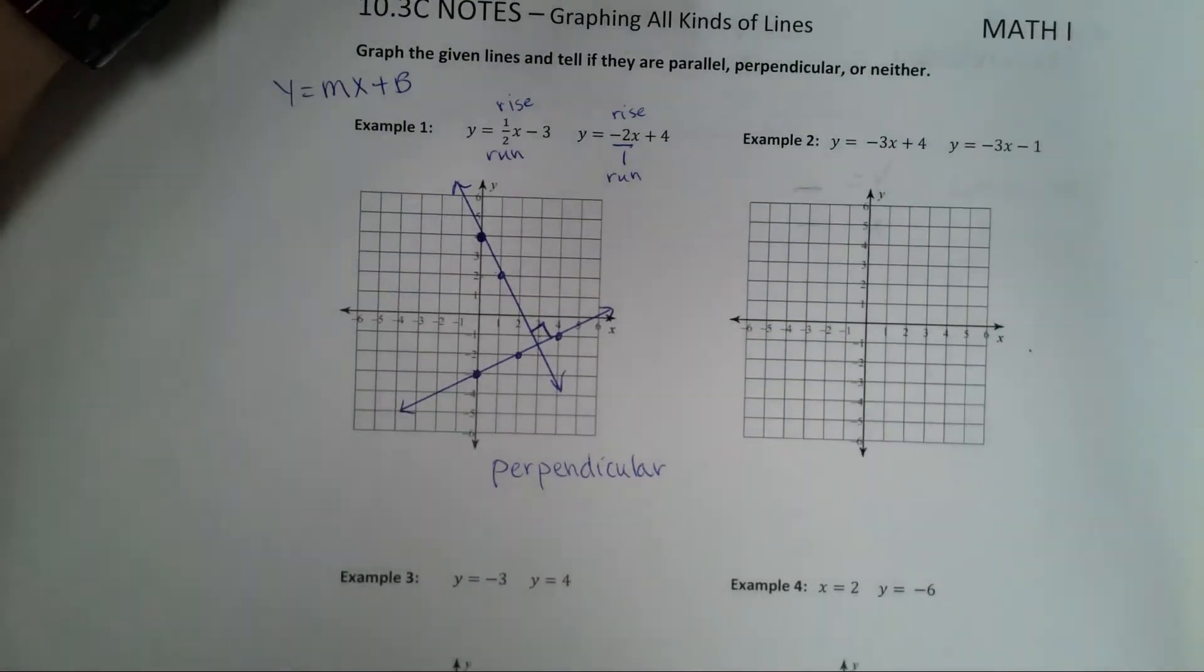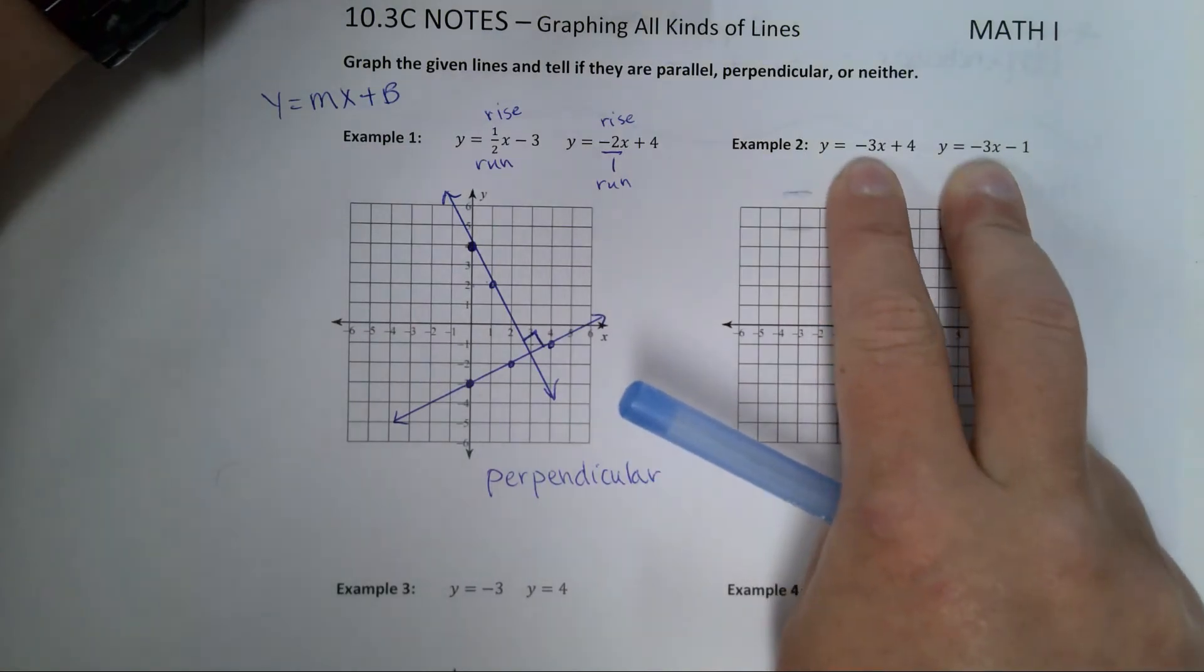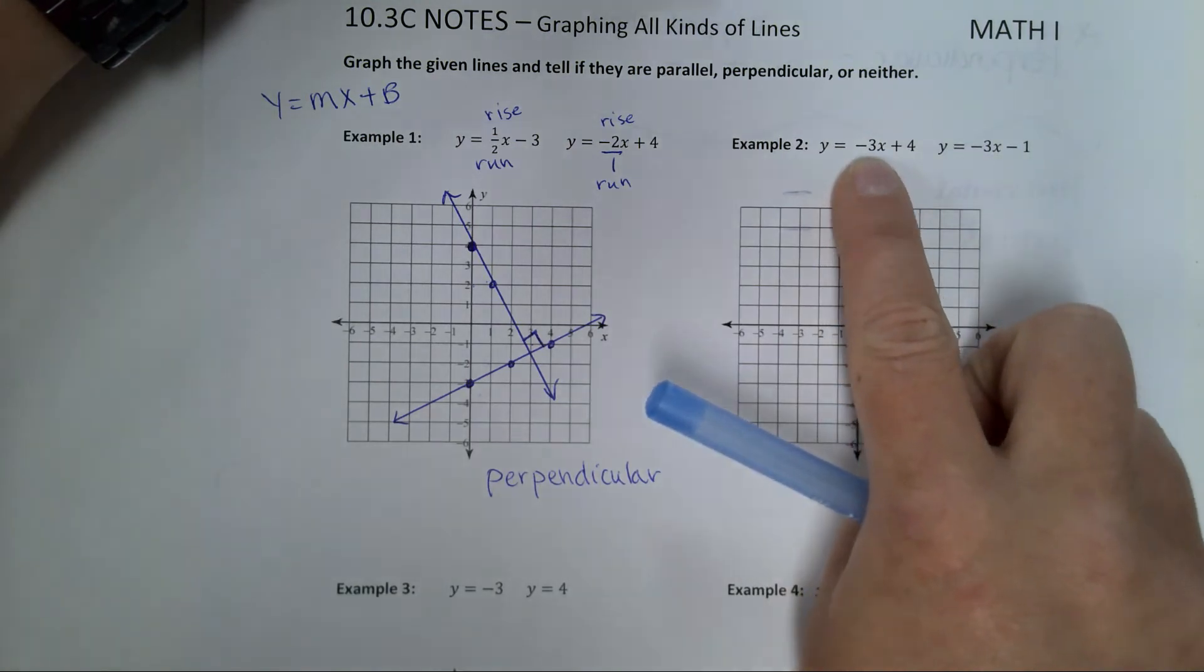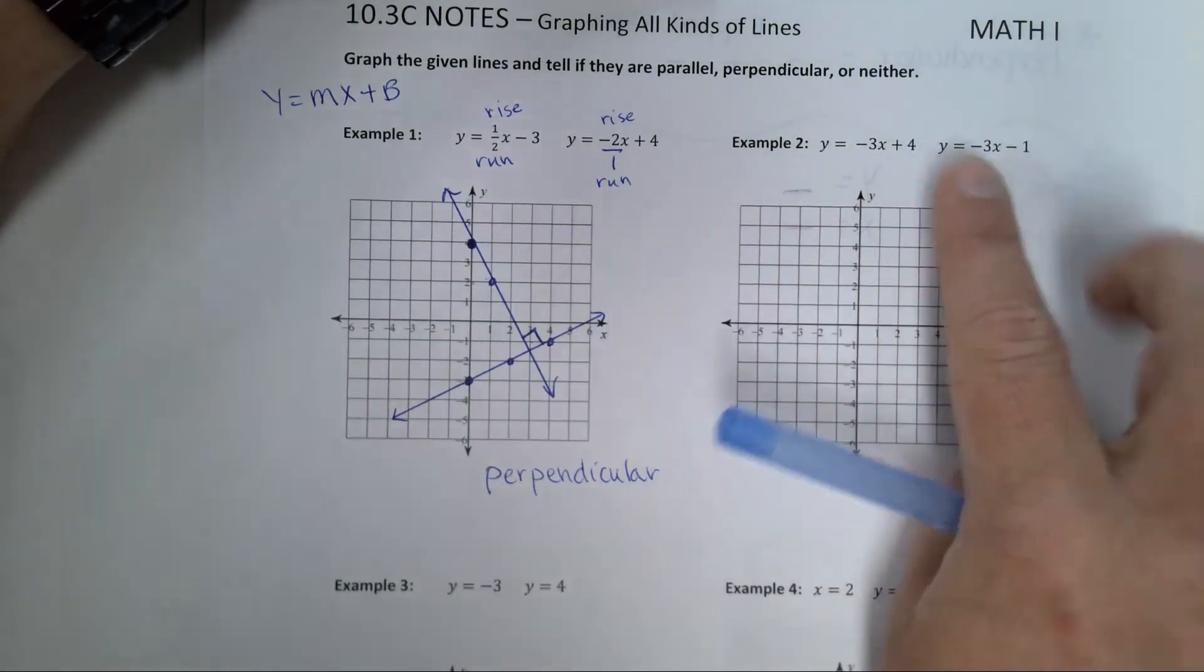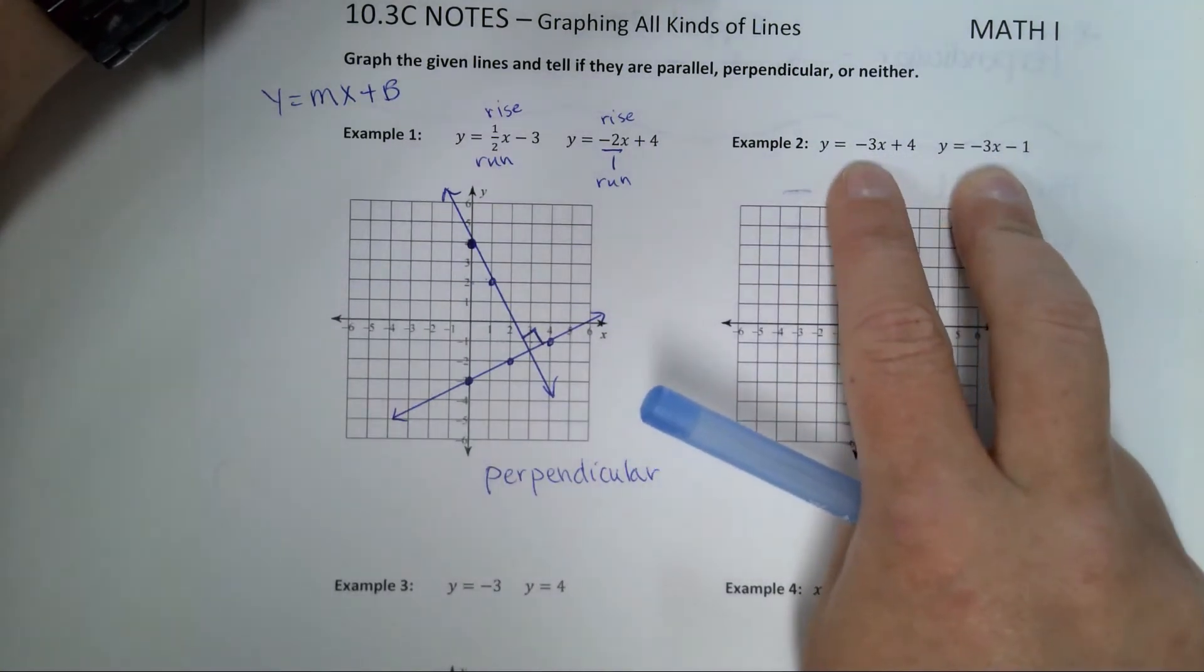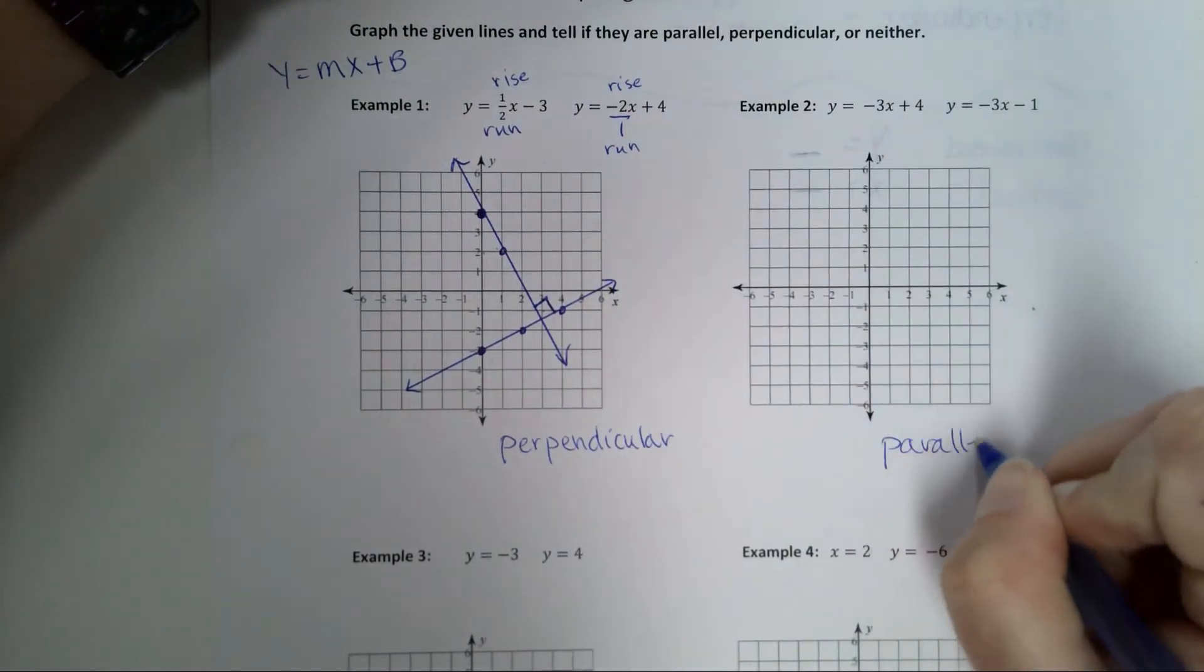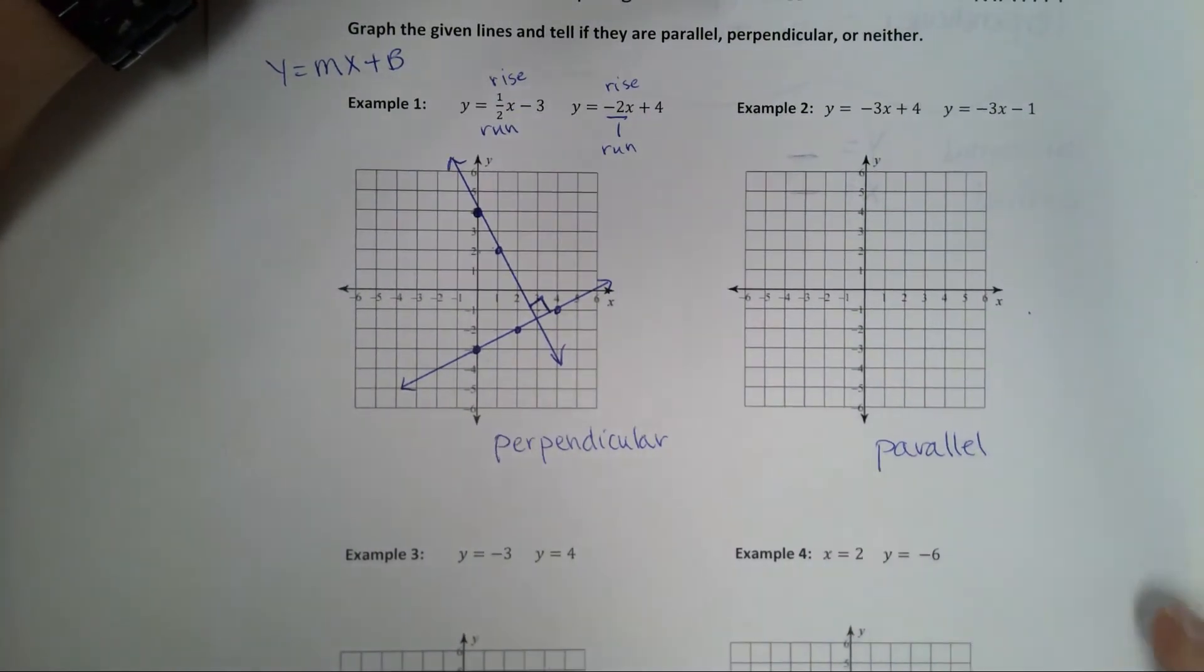Looking at example 2. Right off the bat, what do you notice about these slopes? I've got a slope of negative 3 and I've got a slope of negative 3. These slopes are the same. What does that mean these lines are going to be? Parallel. I'm already going to write that down. Because if I graph it wrong, I still know that these are supposed to be parallel. Hopefully you won't graph it wrong, though.